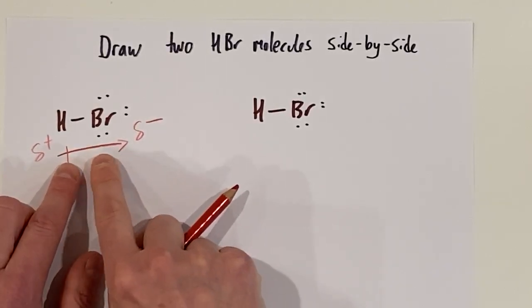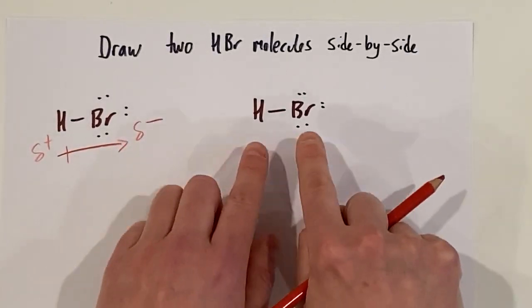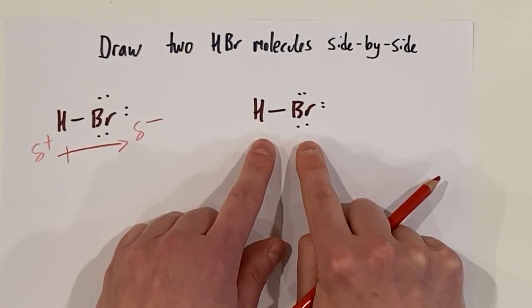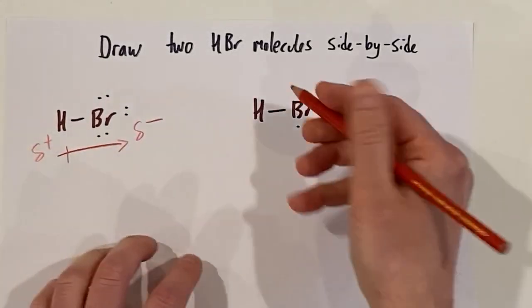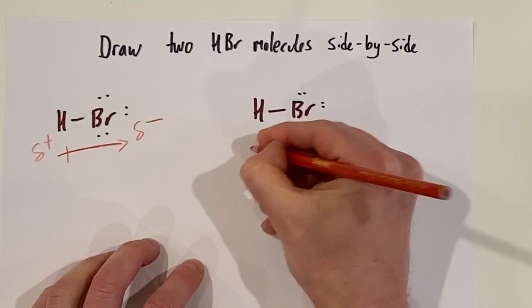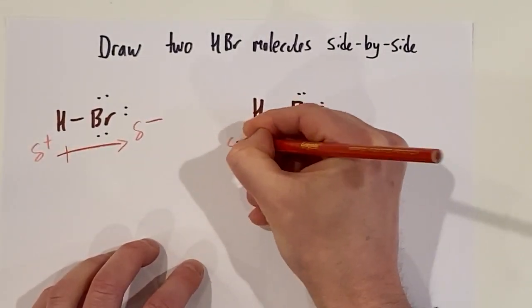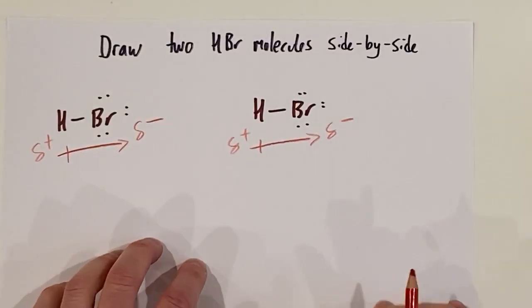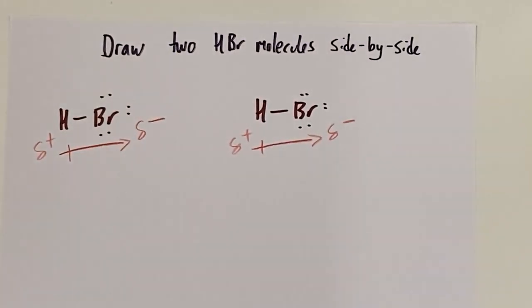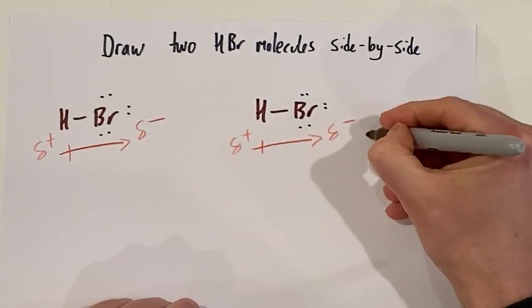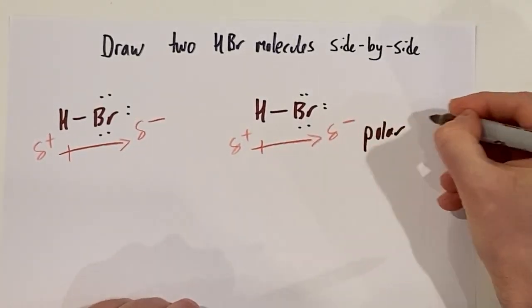Whatever my analysis is for this HBr molecule, it's also going to be the same for this HBr molecule. They're identical molecules. Partial negative on bromine, partial positive on hydrogen. What we have first done here is analyze for polar bonds. There is a polar bond. There are polar bonds.